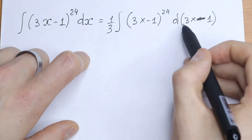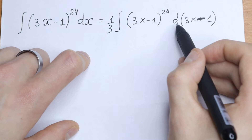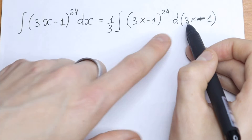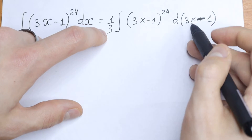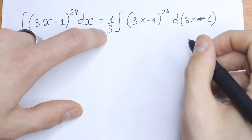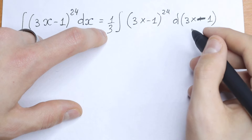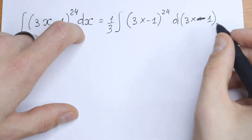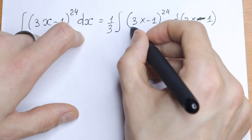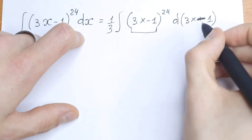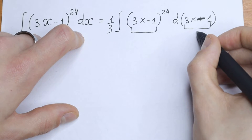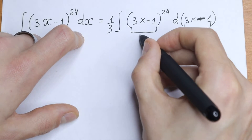If we take a derivative from (3x-1), we will have derivative of 3. And if we multiply by these 3, we will have 1, so nothing changes. This is the same and this is the same. So we can take a substitution.